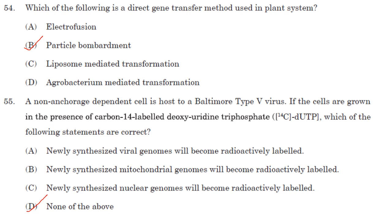A non-anchorage-dependent cell is host to a Baltimore type 5 virus. If the cells are grown in the presence of carbon-14 labeled deoxyuridine triphosphate (dUTP), which statements are correct? The type 5 virus has an RNA genome replicated using UTP, not dUTP, so viral genomes will not become radioactively labeled. Host cells use DNA as genomic material, which does not contain uracil, so neither nuclear nor mitochondrial genomes will be labeled. Answer is none of the above.